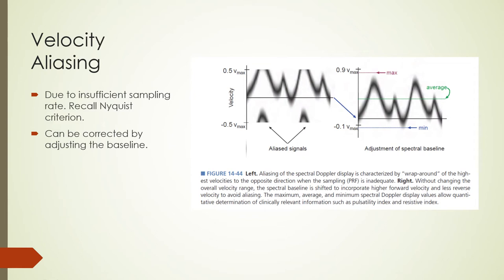Velocity aliasing is due to an insufficient sampling rate relative to high-frequency Doppler signals generated by fast-moving blood. According to the Nyquist criterion, we need to sample at twice the highest frequency in the signal — a minimum of two samples per cycle of Doppler shift frequency. In a spectral Doppler display, aliased signals wrap around to the negative amplitude side, appearing as reversed flow. The baseline may be adjusted from -0.1 to +0.9 V max to assign most sampling to positive velocities.